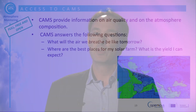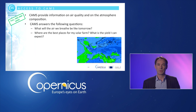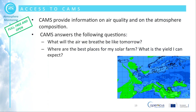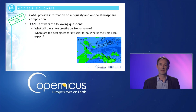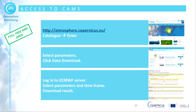CAMS is the Copernicus Atmosphere Service. It produces useful data for a large number of applications covered by the public and the private sectors — for example, the solar energy industry, health and transport, or climate change. CAMS is not a meteorological service, but it can provide answers to questions such as: What will the air we breathe be like tomorrow? Will air pollution events such as the smoke from forest fires in Canada or volcanic eruptions in Iceland affect air quality in continental Europe? Or, where are the best places for my solar farm and what yield can I expect? Registration is required to download information, but search and viewing are not. Like all the previous Copernicus services, all data is under a free, full and open policy.